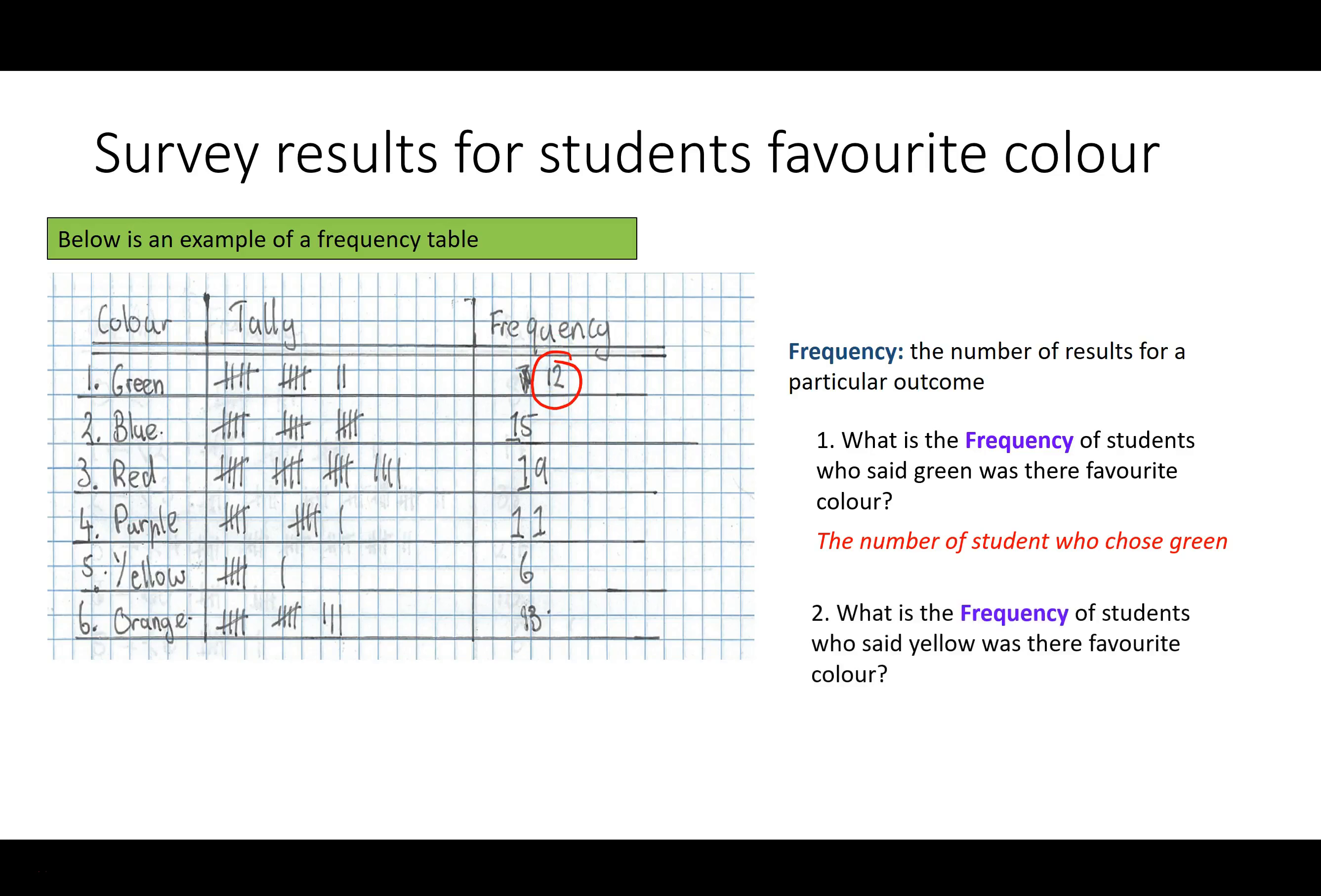What is the frequency of students who said yellow was their favourite colour? So there we go, there's yellow and it's 6. In student terms this is the number of students who chose yellow.